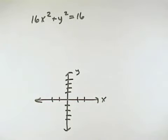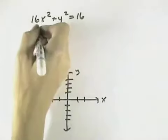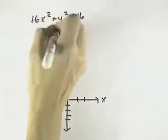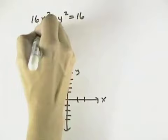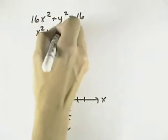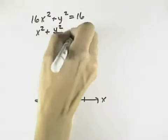Here we want to determine what type of graph this particular equation will be. Because of the constant in front of x squared, it doesn't fit any equation yet. But if we divide everything by 16, we'll get x squared plus y squared over 16 equals 1.